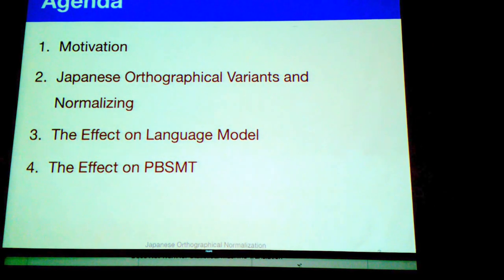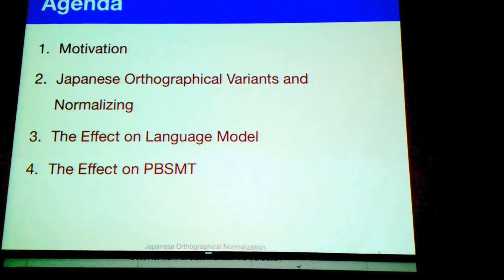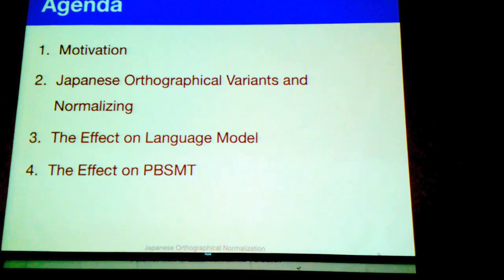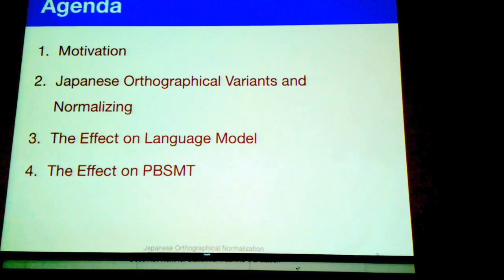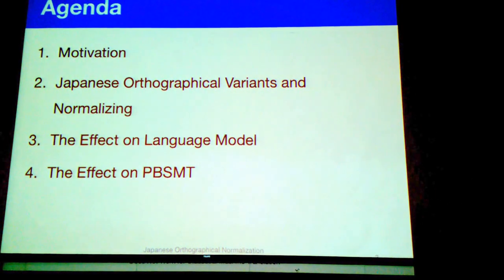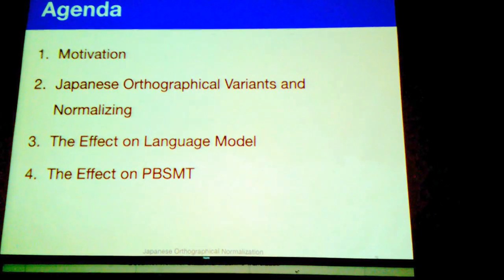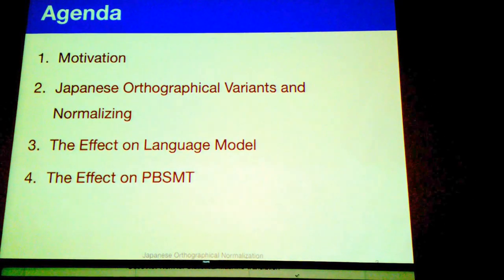This is the agenda. I divided it into four parts. First is motivation. Second is the definition of Japanese orthographical variance and how we normalize it. Third, the effect on the language model. And finally, I introduce the effect of normalization on phrase-based SMT.